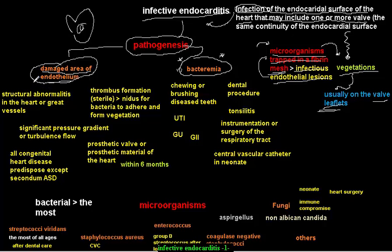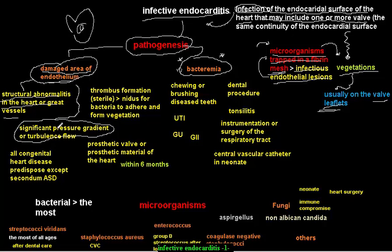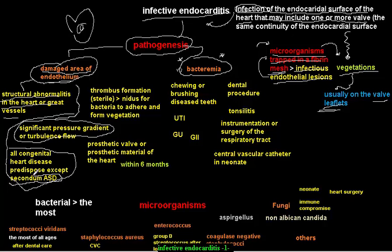All conditions that may lead to a damaged area of endothelium will predispose to endocarditis — such as structural abnormalities in the heart or great vessels. A significant pressure gradient or turbulent flow can damage the endothelium. All congenital heart diseases predispose to endocarditis, except for what we call secundum ASD.